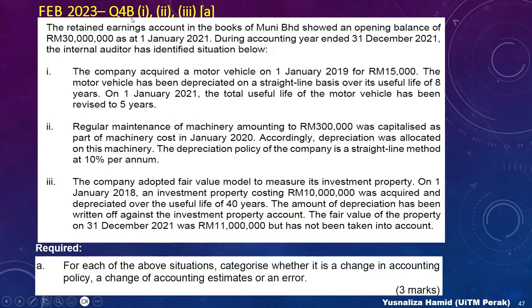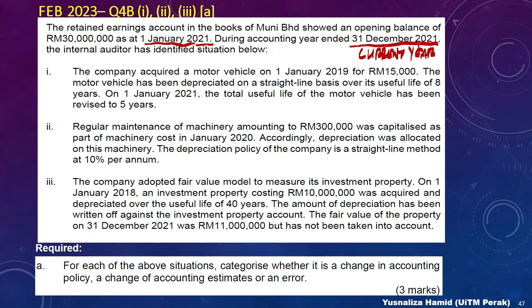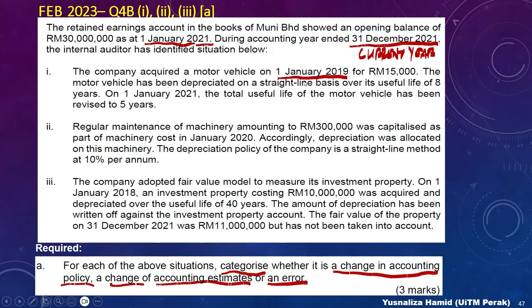Moving to part 4B, there are three scenarios — scenario 1, 2, and 3 — and three requirements: A, B, and C. Starting with requirement A. The retained earnings in the books of Muni showed an opening balance of 30 million as at 1st January 2021, which is the beginning of the current year. During the accounting year ended 31st December 2021, the company acquired a motor vehicle on 1st January 2019. You are asked to categorize whether each item is a change in accounting policy, a change in accounting estimates, or a prior period error.